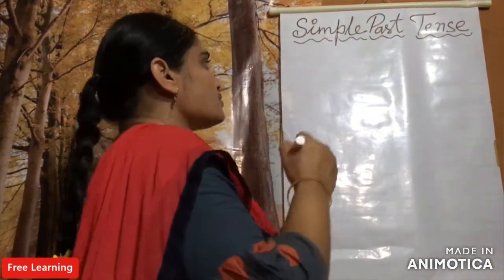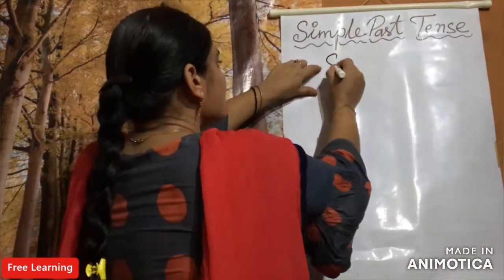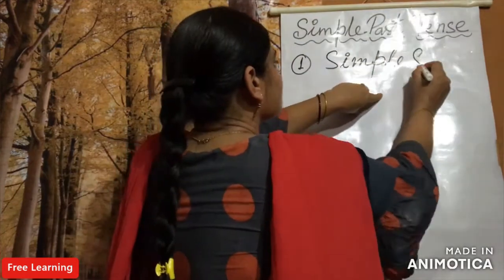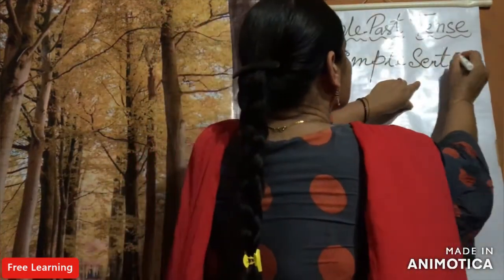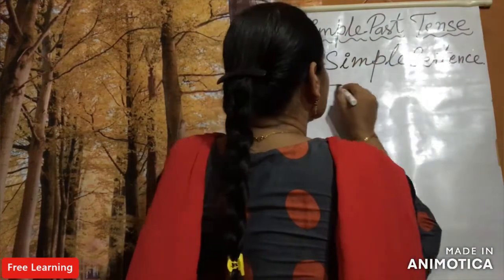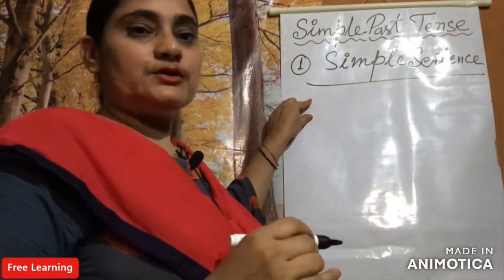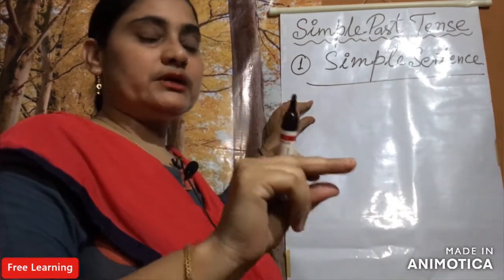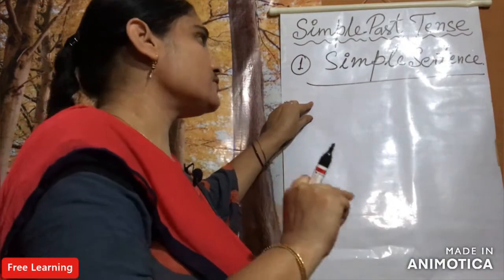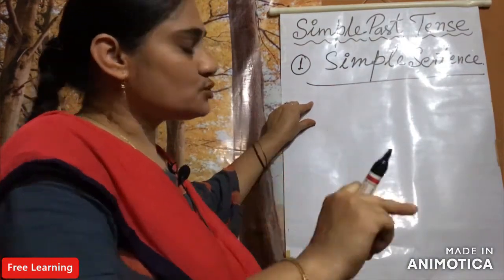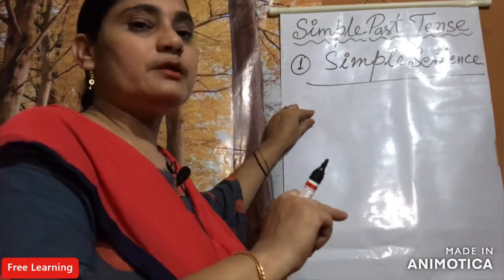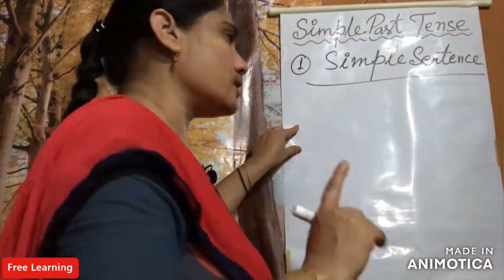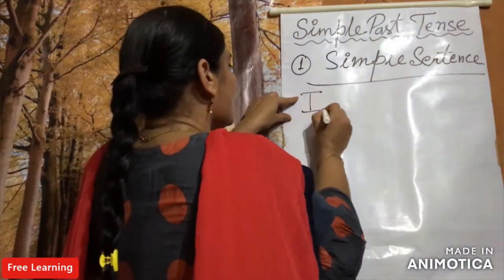This is Simple Past Tense. The first type is the simple sentence. As we know, like in simple present tense we don't need the helping verb in simple sentences, similarly there is no need to use the helping verb in simple past tense. We use the past tense verb — that means the second form of the word. For example: I went.